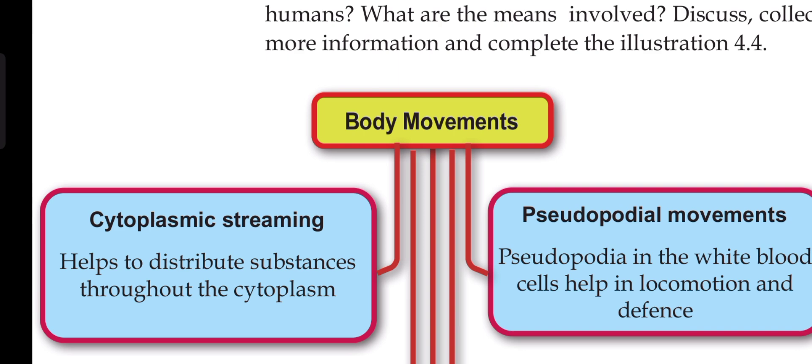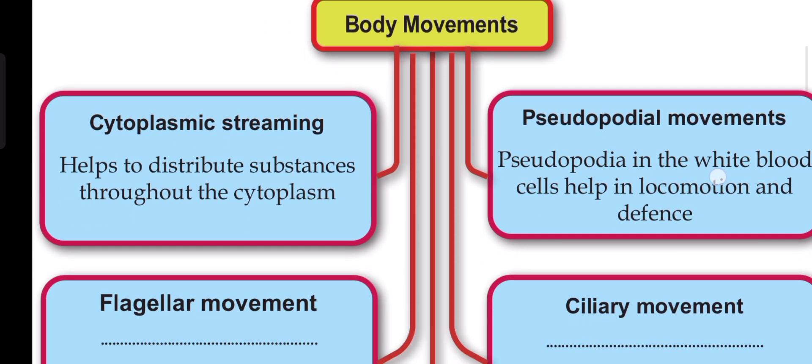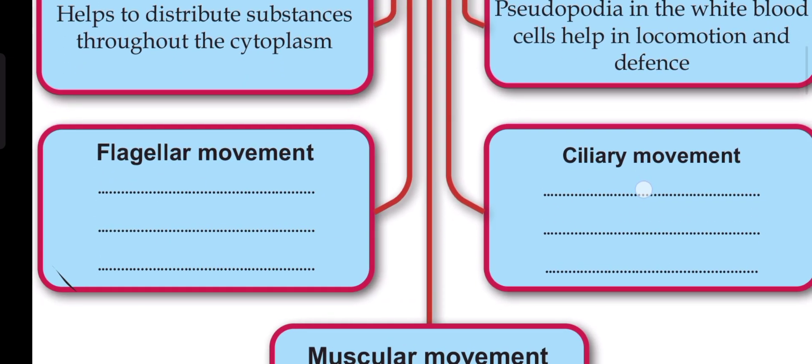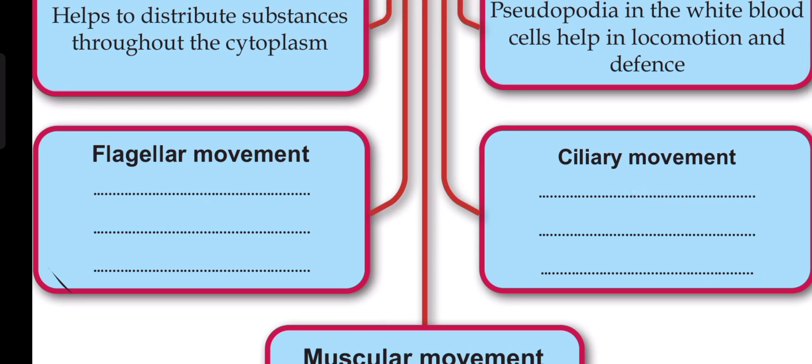Cytoplasmic streaming helps to distribute substances through the cytoplasm. Pseudopodia are used by white blood cells to help in locomotion and defense. White blood cells use pseudopodia for locomotion and defense.